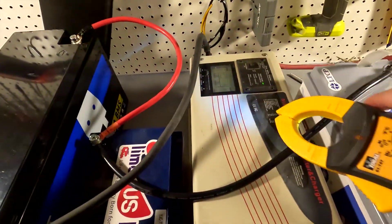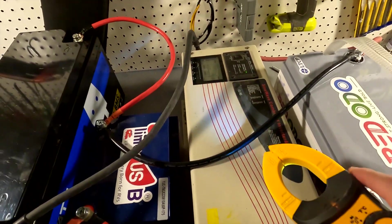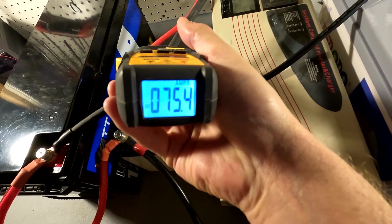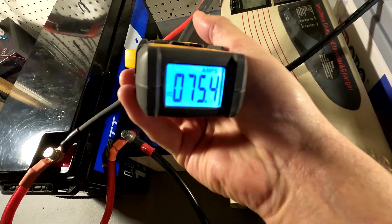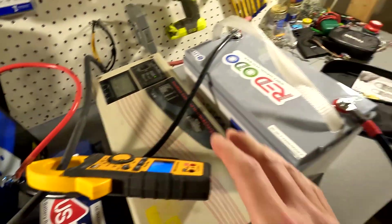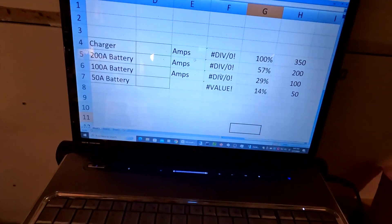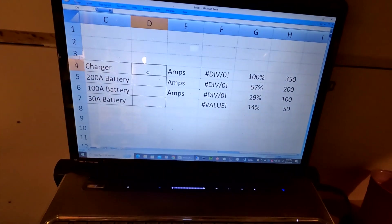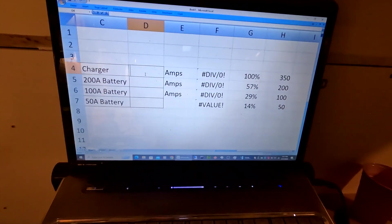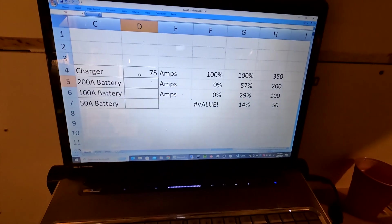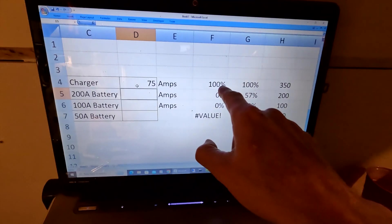Okay, here is our charger. It's a 75 amp charger and we are getting 75.4, 75.5. We're going to do everything, we're going to round everything. So let's just say 75. So charger is 75 amps. And then that equates to 100% right there.